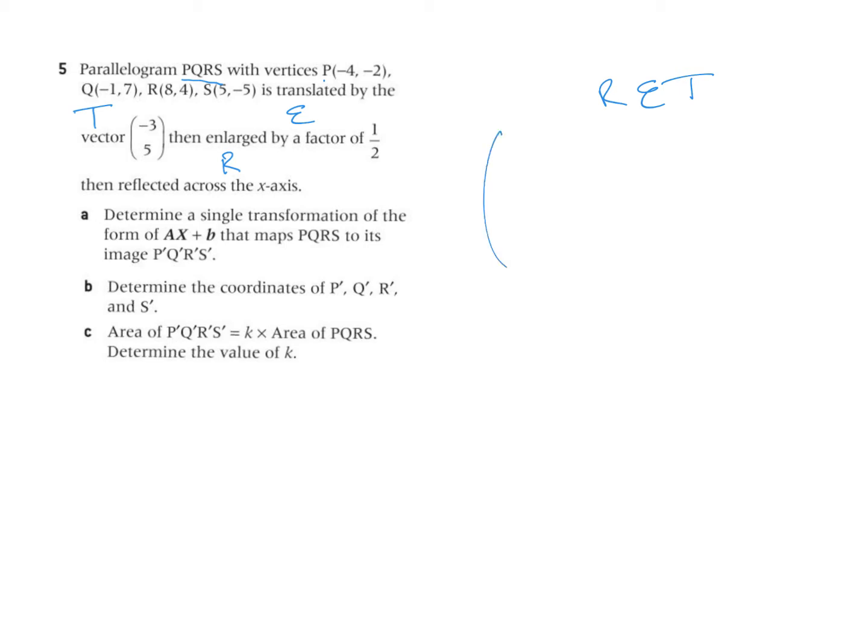Well, the reflection over the x-axis means that one zero stays as is, but zero one becomes zero negative one. This is R.